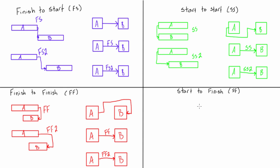The last one is the start to finish relationship. This one's totally weird and seems a little less practical than the rest, but let's jump right to an example with some lag. Let's say it's a start to finish 3. We'll draw two completely arbitrary activities and label them. What we're saying is that if it's a start to finish 3, activity B can finish three days after activity A starts. We'd connect this line here — on our Gantt chart's x-axis of days, the start of A and the end of B would differ by three days.